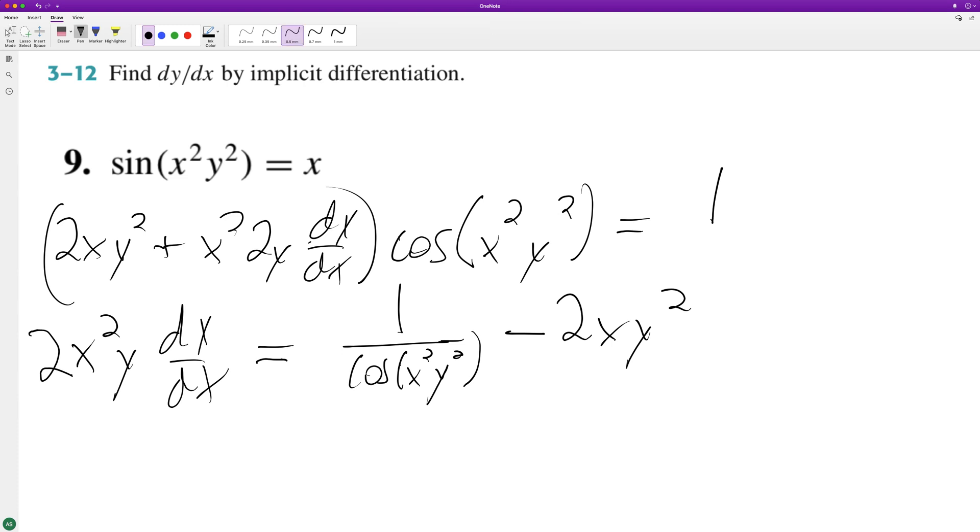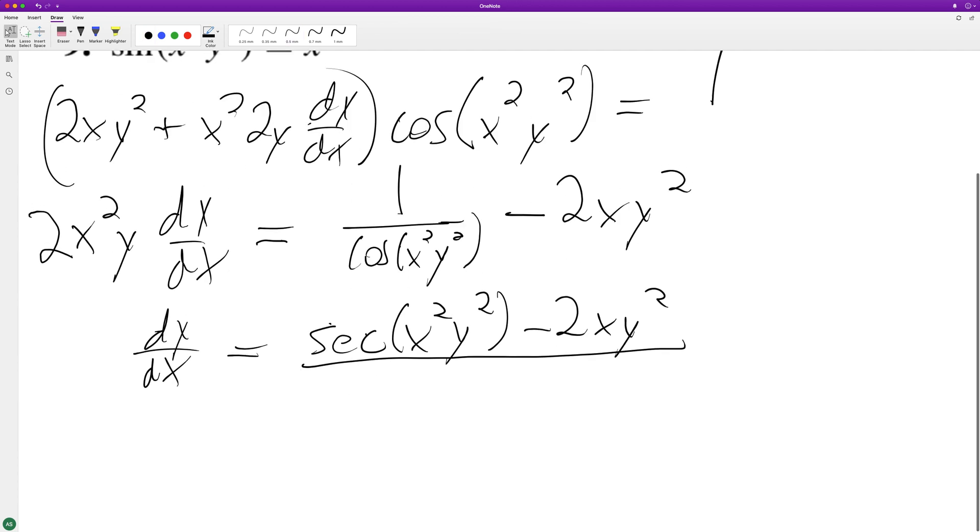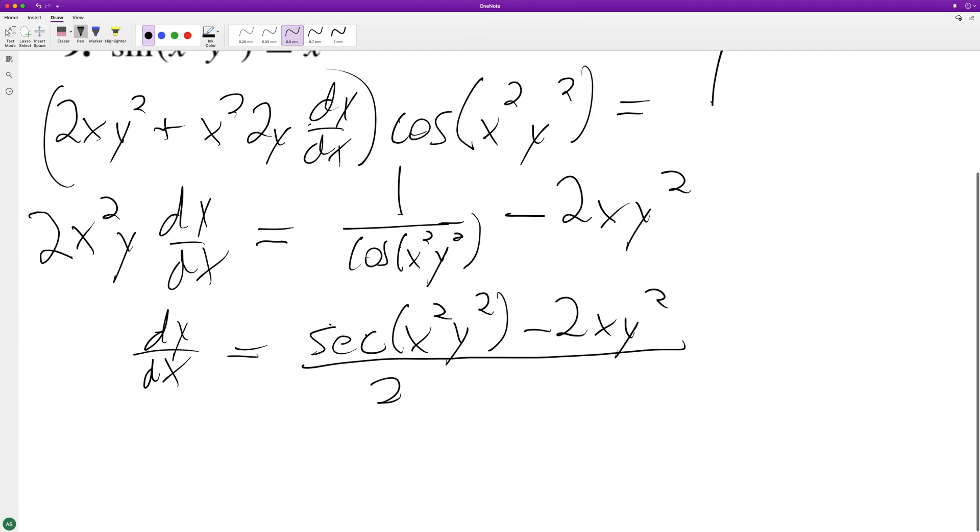So we end up with dy/dx equal to 1 over cosine, which is the same thing as secant of x squared y squared, minus 2xy squared, all over 2x squared y. That's it.